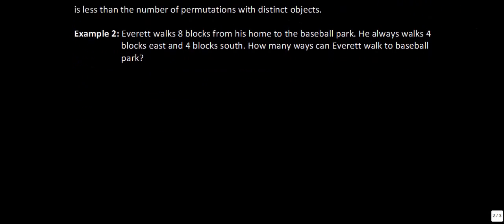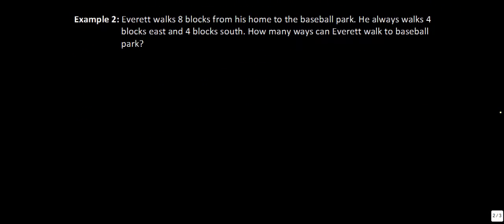For example number 2 right here, it says Everett is going to walk 8 blocks from his home to the baseball park. He always walks 4 blocks east and 4 blocks south. How many ways can Everett walk to the baseball park? So this is what it really looks like if I was to draw ourselves a picture. We'd have something like this. This would be Everett. This would be the baseball park. So if Everett wants to get from here to here, obviously if you were going to do this just by hand it would be quite painful. We'd have to navigate. That would be one way. This would be two ways. This would be three ways. It's also tough to kind of keep that sorted. So assuming this is symmetrical like we have right here, this actually makes for a fairly easy question.